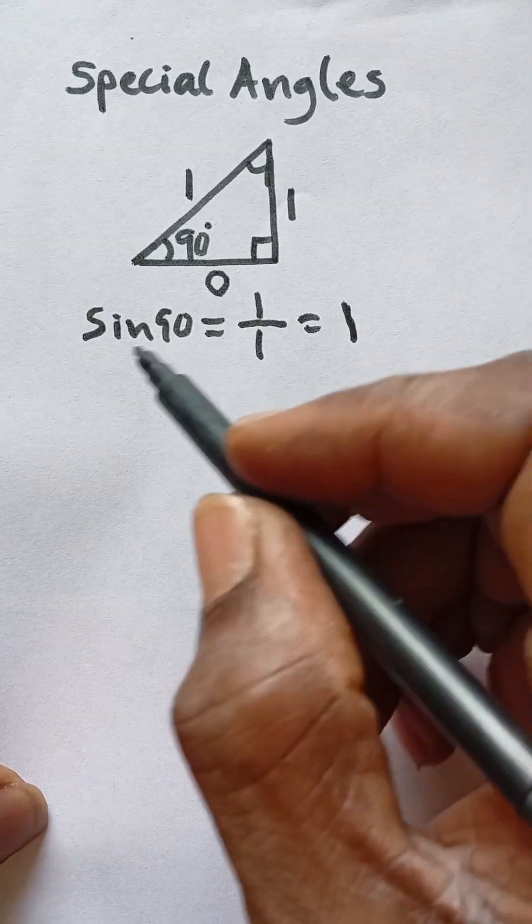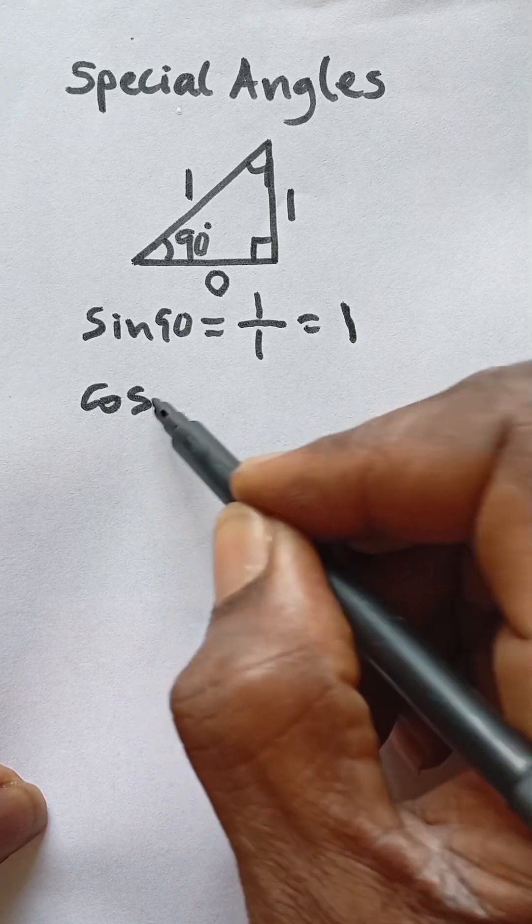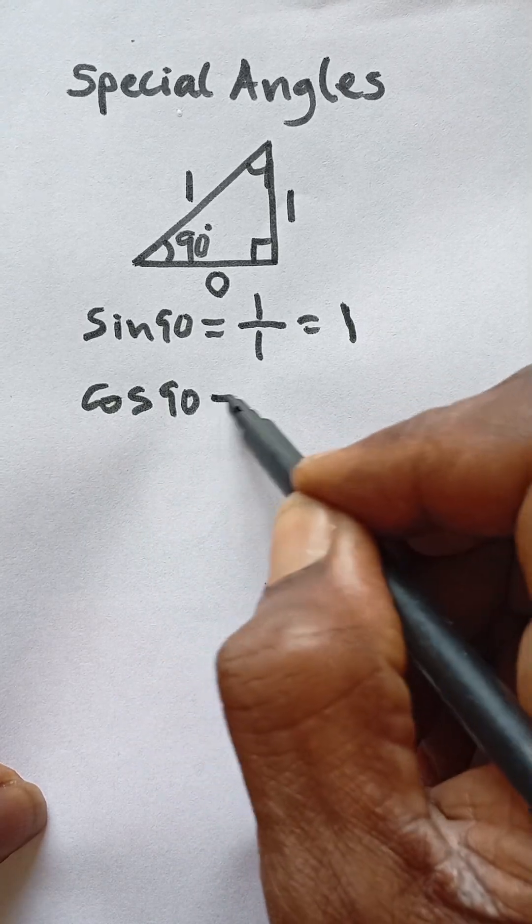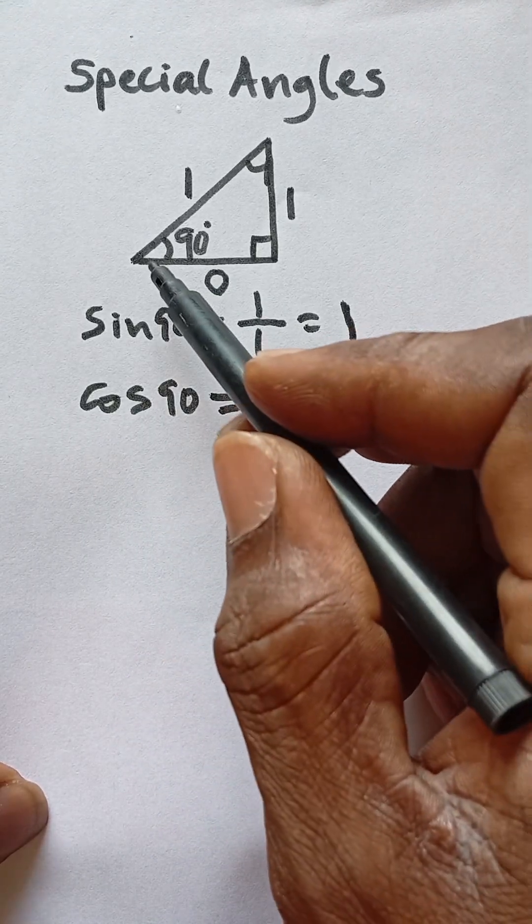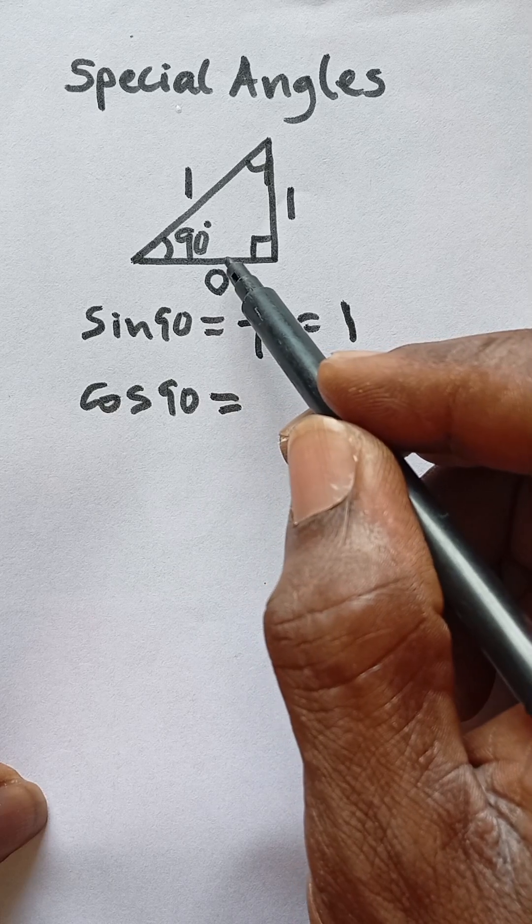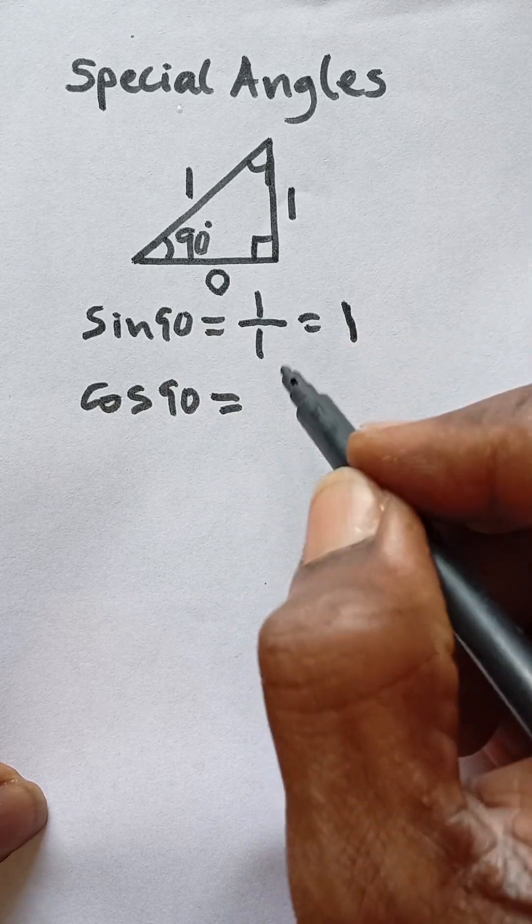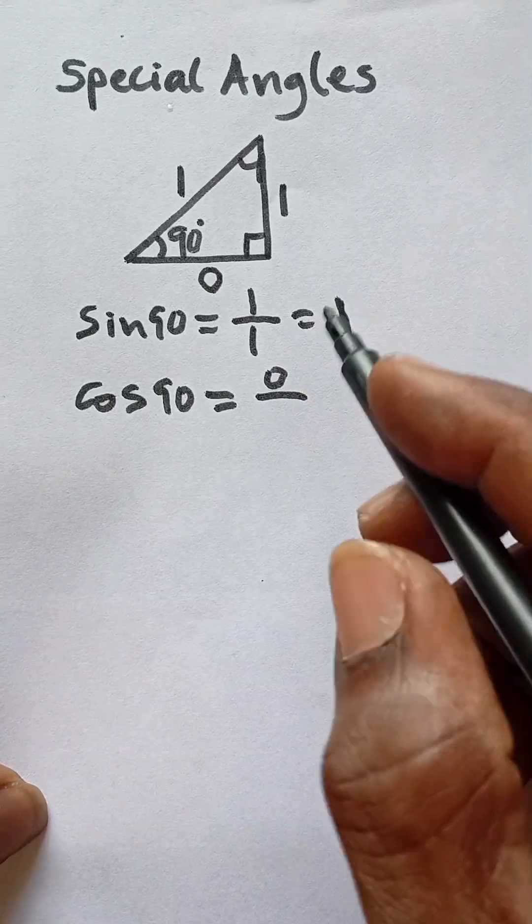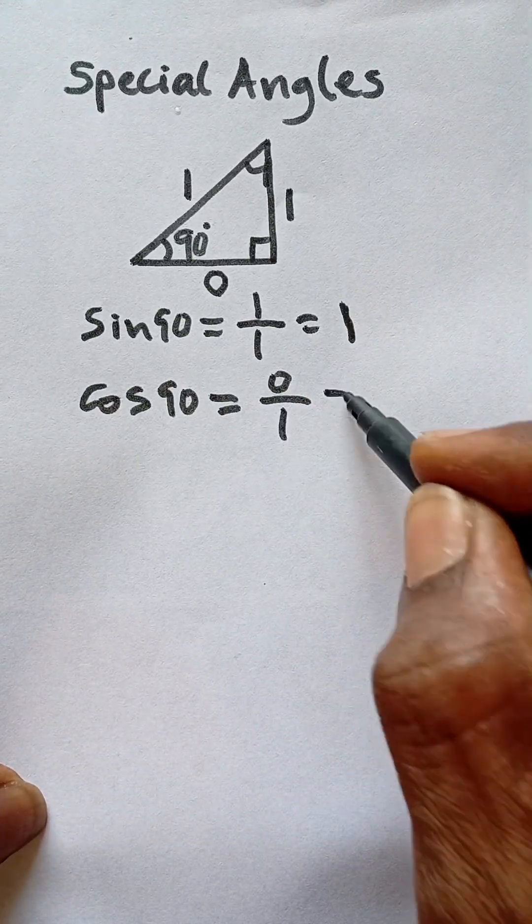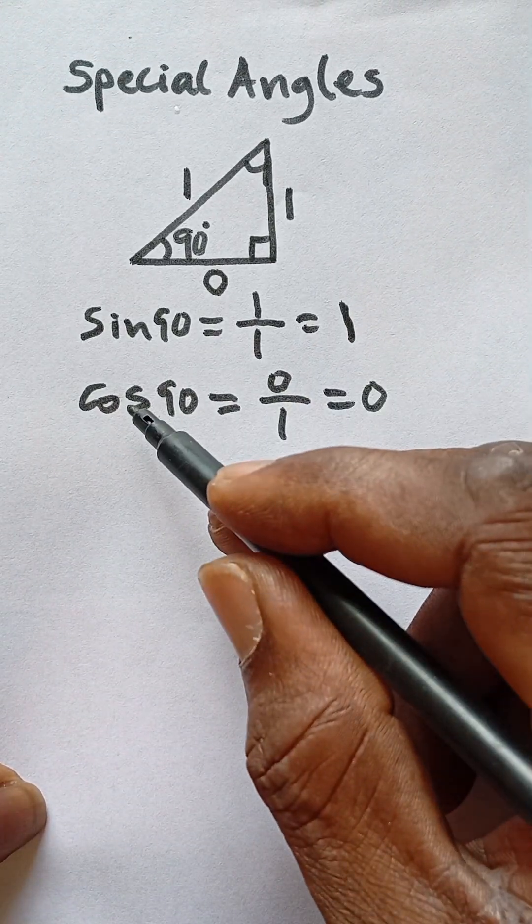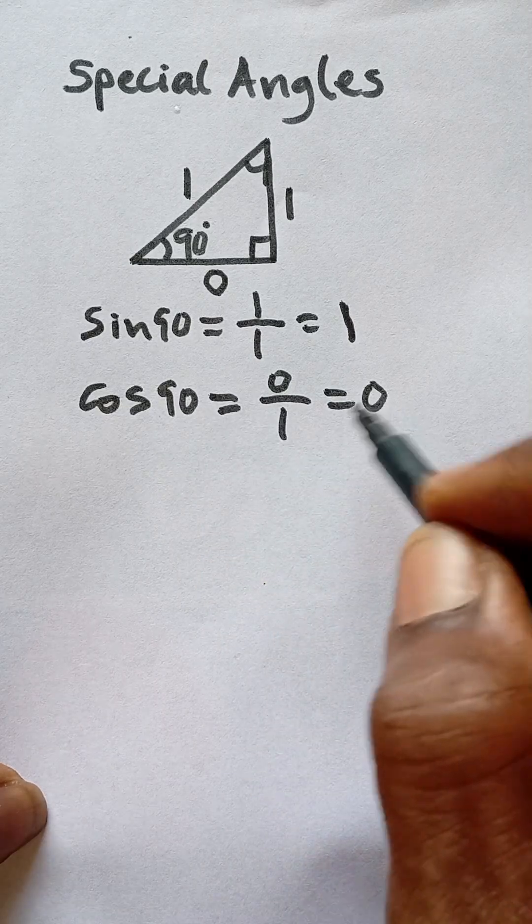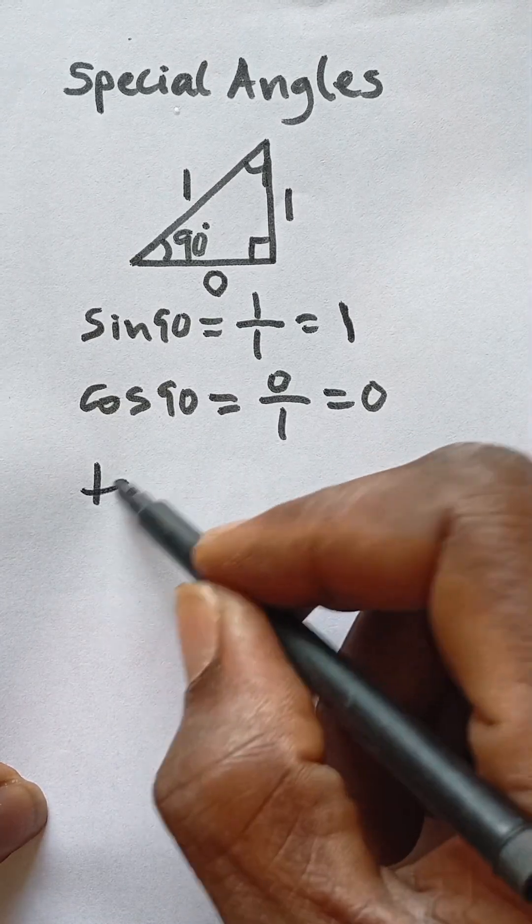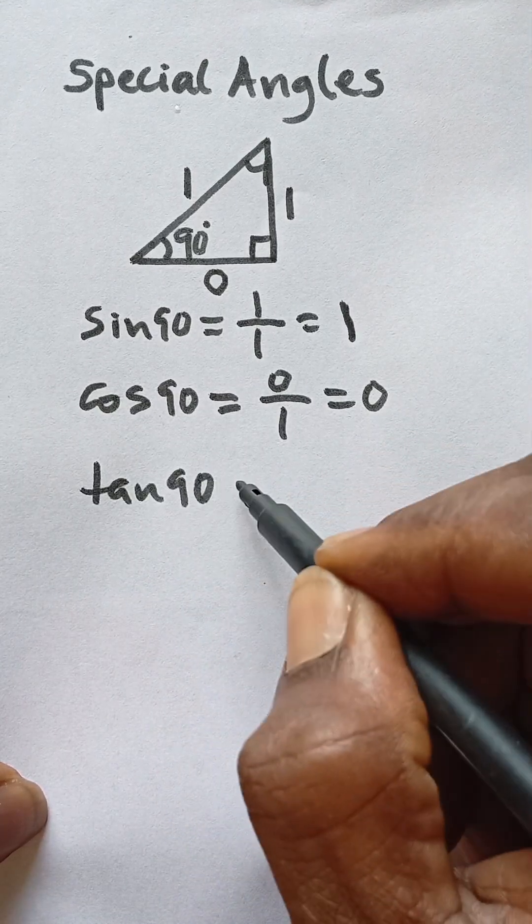If we look at cos 90, it will be equal to the adjacent side. The adjacent side, which is here, is zero over the hypotenuse, which is one, and that will be equal to zero. That tells us that cos 90 is zero.